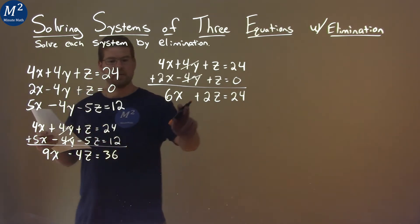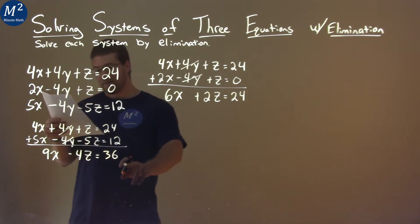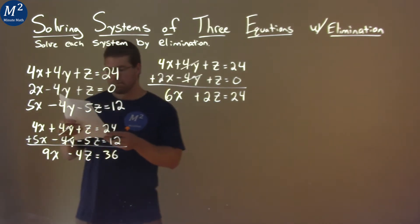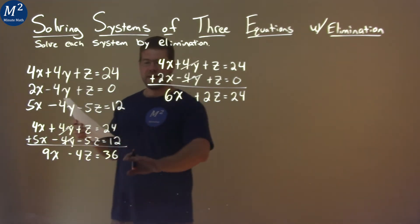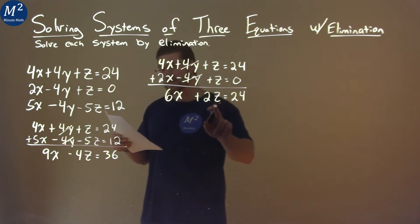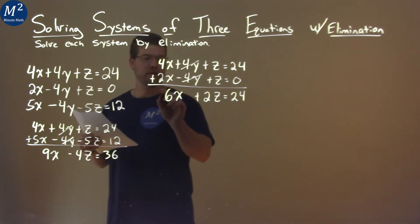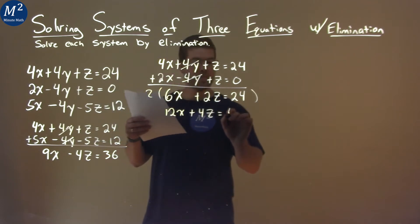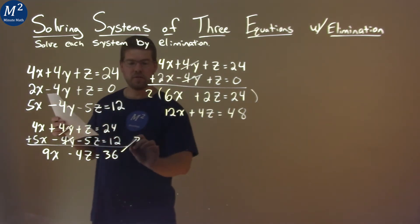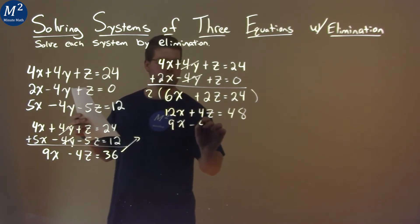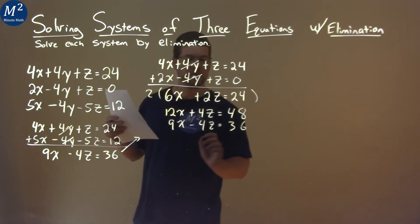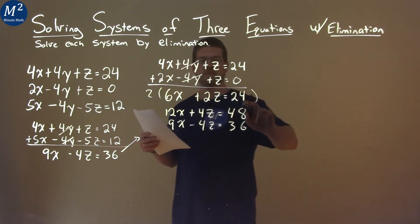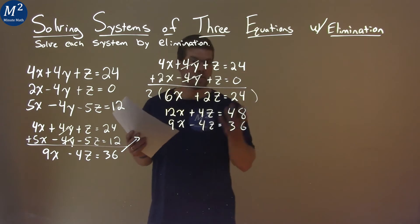So now we have two equations here that each has an x and each has a z. And we can really try to eliminate that, find a way to eliminate a variable. I'm looking at my z's. We have a negative 4z here and a positive 2z. If I multiply this equation right here all by 2, I'd have 12x plus 4z equals 48.